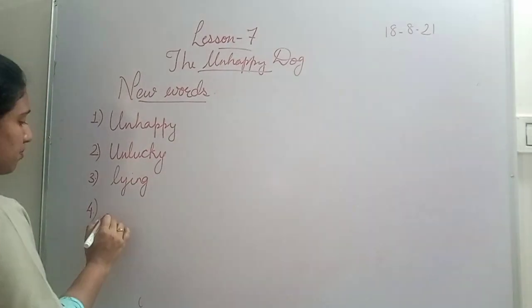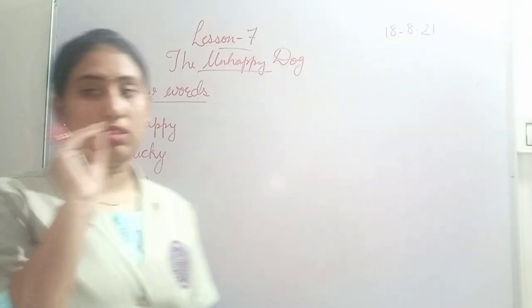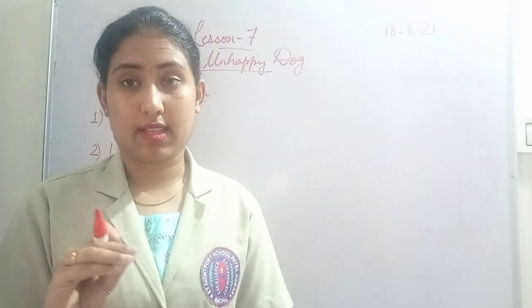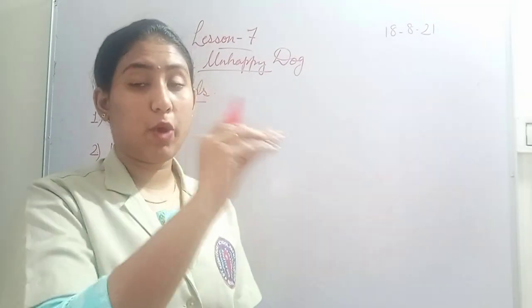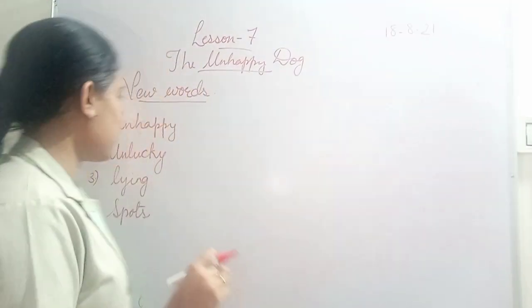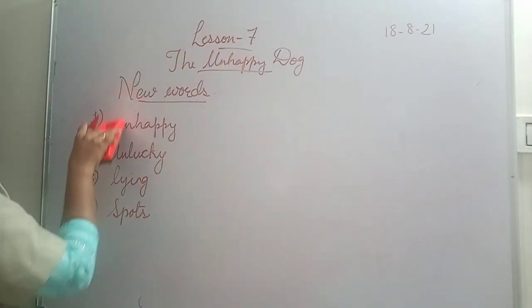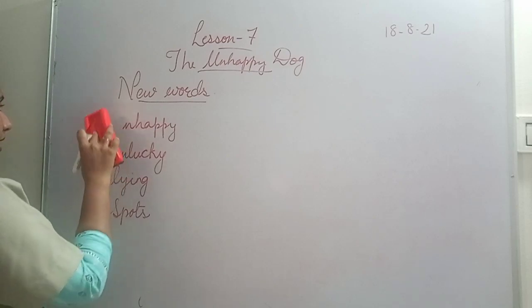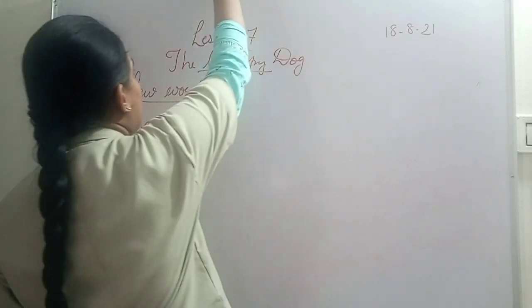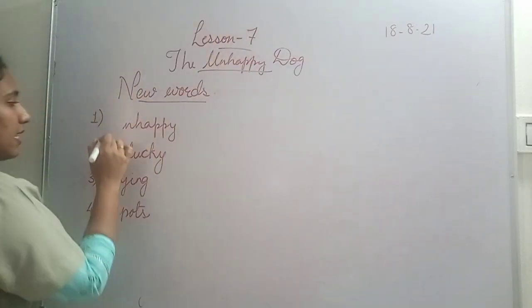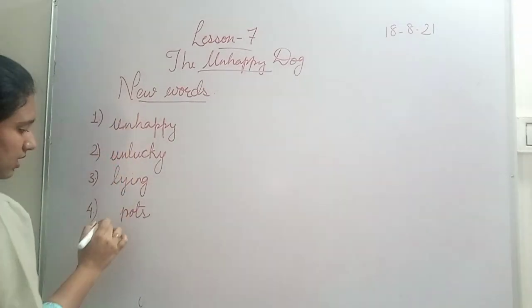Then fourth is 'spots.' What is the meaning of spots? The brown or white colored round patches on the body. Spots means patches. There is a small correction: new words, the first letters should be capital.